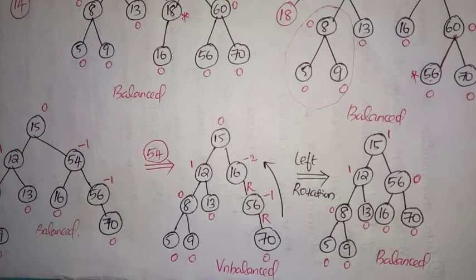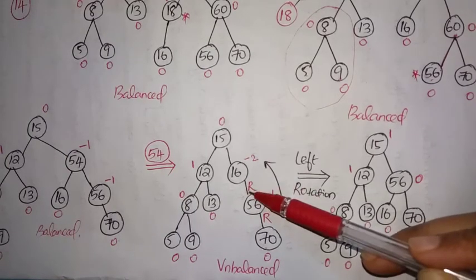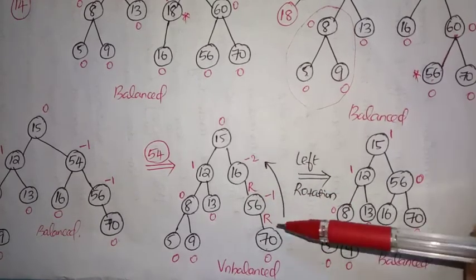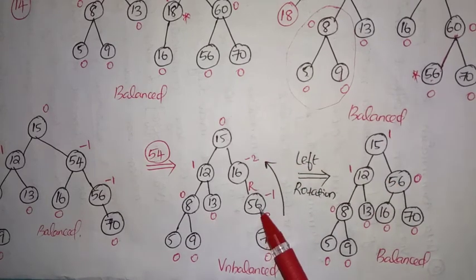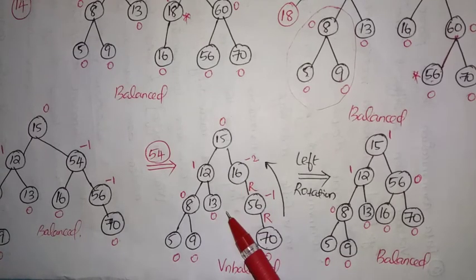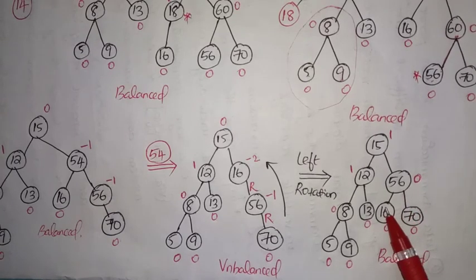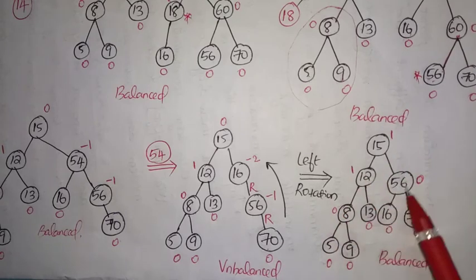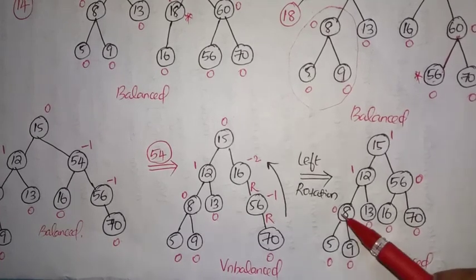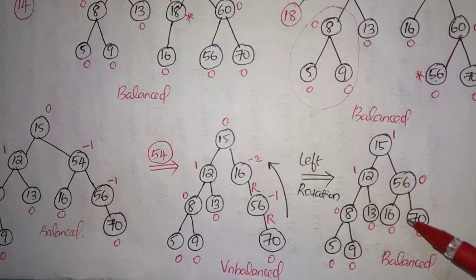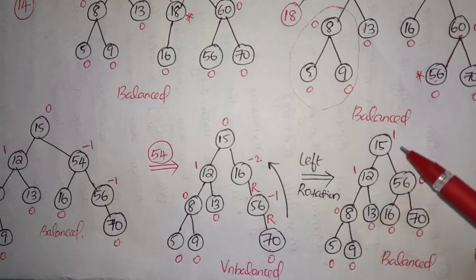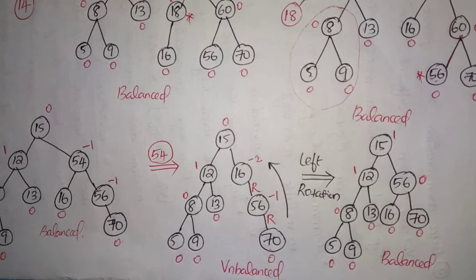We need to identify which rotation to perform. There are four types of rotation; here the imbalance is an RR condition, so the rotation to be performed is a left rotation, which is an anti-clockwise rotation. Node 56 moves upward and node 16 comes downward, while 70 remains as-is. After the rotation, recalculating balancing factors: leaf nodes are 0, 0, 0, 0, 0, 0. Here 1 minus 1 equals 0; 2 minus 1 equals 1. All balancing factors are 0, minus 1, or 1 — the tree is balanced. This is how deletion of nodes is performed in an AVL tree.